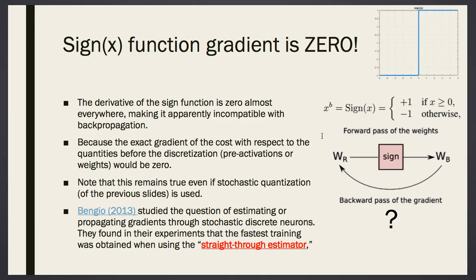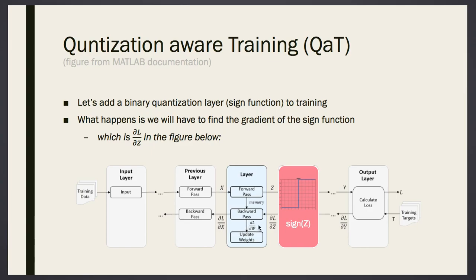The signum function's gradient is zero almost everywhere. At only one point is there a change; other than that, it's all zero. The derivative of the sign function is zero almost everywhere, making it apparently incompatible with backpropagation. When we multiply derivatives via the chain rule, all derivatives become zero at this layer — you multiply the loss by zero and all the loss gradient is lost. Gradient vanishes. When the gradient vanishes, learning vanishes.